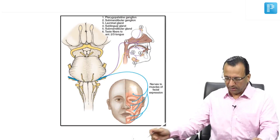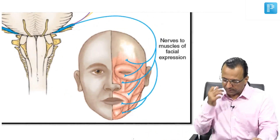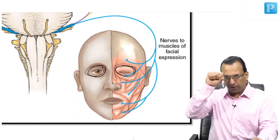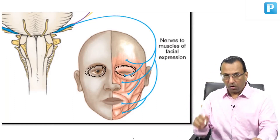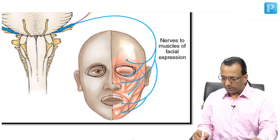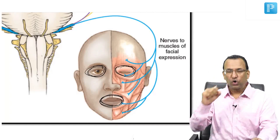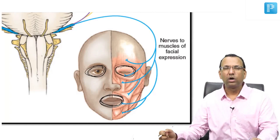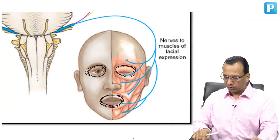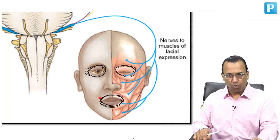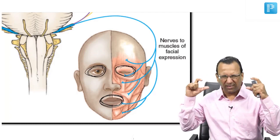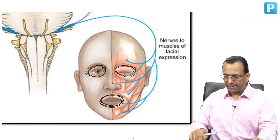The muscles being supplied are muscles of facial expression. Orbicularis oculi shuts the eyelid, and orbicularis oris shuts the mouth — it helps you whistle. So orbicularis oris will help me to whistle, and I'll shut my eyelid tightly with orbicularis oculi.